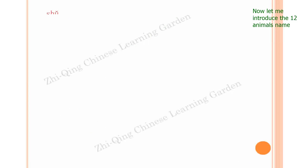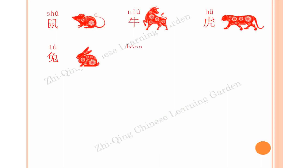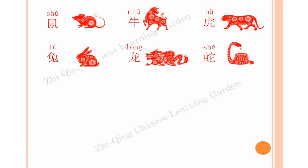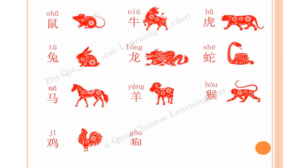Now let's learn the 12 animal names. Shu — rat. Niu — ox. Hu — tiger. Tu — rabbit. Long — dragon. She — snake. Ma — horse. Yang — goat. Hou — monkey. Ji — rooster. Gou — dog. Zhu — pig.